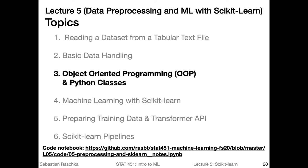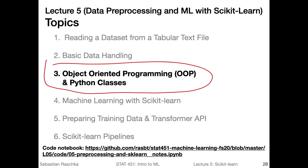So this is it for this video. We talked about converting string class labels into integer class labels, we briefly talked about lambda functions, apply, and map, which are convenient in pandas when we do such transformations. We also talked about how we can divide a dataset into training, validation, and test sets. In the next video, we will be talking about some basic object-oriented programming concepts and Python classes, because that will be useful for understanding how scikit-learn works.